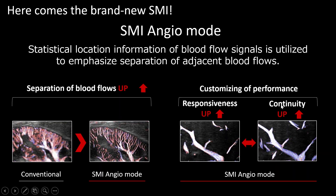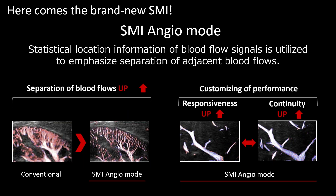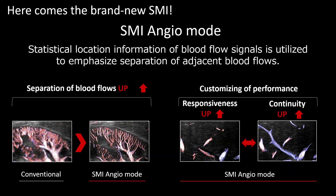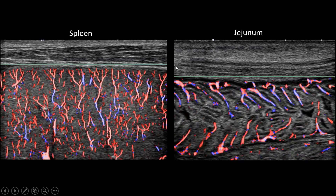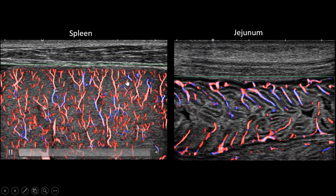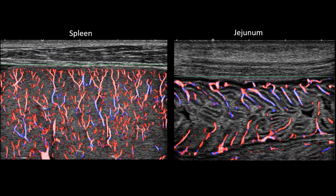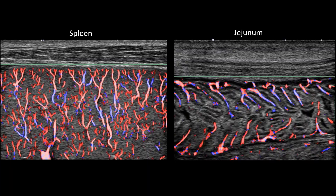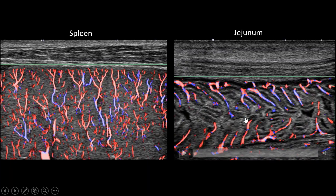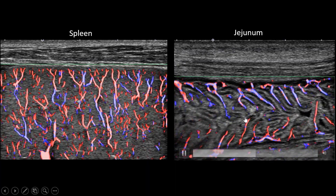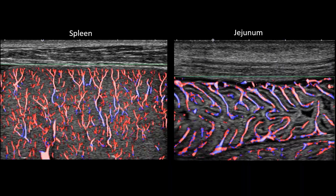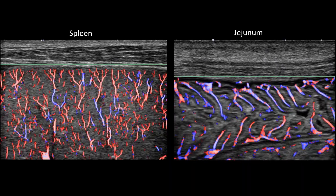If you want to see the continuity of the blood flow, you can also customize the performance by changing the mode. This shows the blood vessel structure of the spleen using the new SMI, and this shows the jejunum blood flow — you can see each blood vessel in every fold.